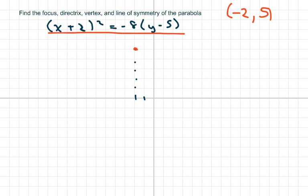Your focus comes from the a, and this part right here is your 4a. So you set this to 4a and you're going to get negative 4a equals negative 8, so a equals 2.